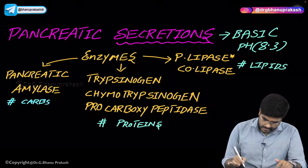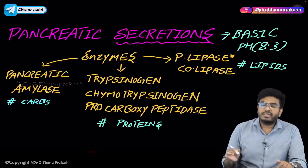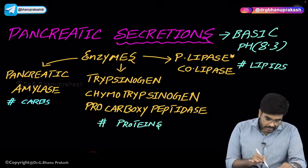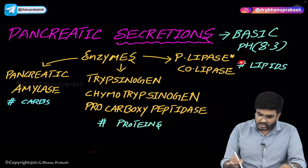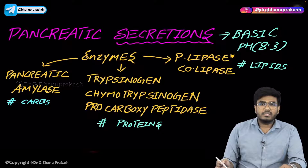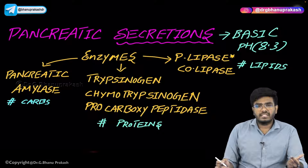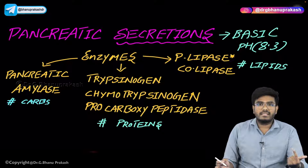Pancreatic secretions have different types of enzymes which help in digestion of food. There are enzymes for the digestion of carbohydrates, enzymes for the digestion of proteins, and enzymes for the digestion of lipids. So all carbohydrates, proteins, and lipids are getting digested with the help of pancreatic enzymes.